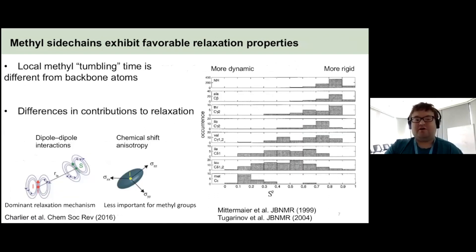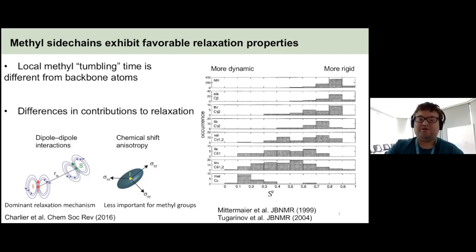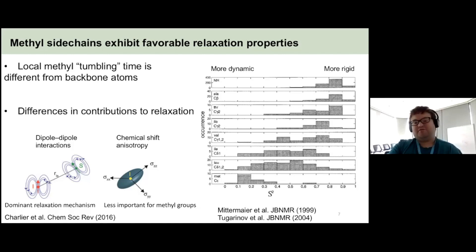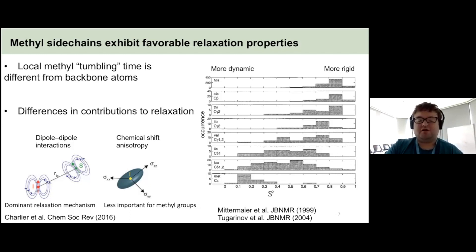Methyls have very favorable relaxation properties. They have their own local tumbling time that is different from backbone atoms. Looking at order parameters for amides compared to different methyl groups — where an order parameter of 1 corresponds to a more rigid molecule and 0 to a more flexible dynamic group — as you increase the length of the amino acid side chain, for example methionines with a quite long side chain, you get more flexible moieties. Chemical shift anisotropy is not as big a deal for methyl groups as it is for amides, but dipole-dipole interactions is still a dominant relaxation mechanism.